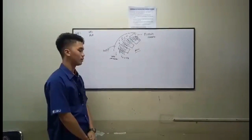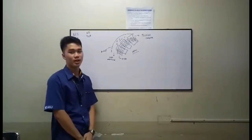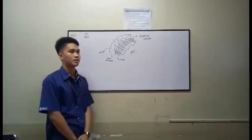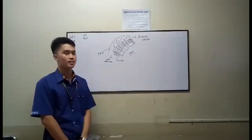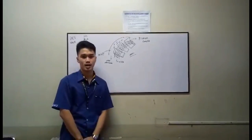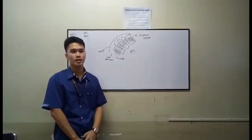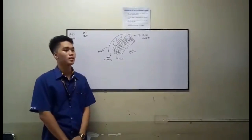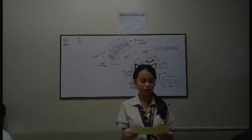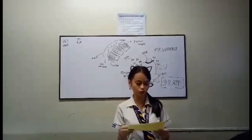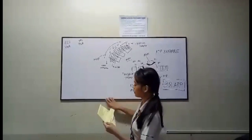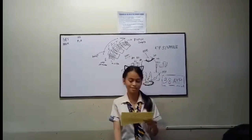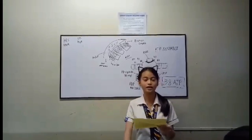This electric region will cause the hydrogen protons to attempt to get back to the matrix. However, since the inner membrane is not permeable to ions, hydrogen protons cannot easily pass back into the matrix. Because of this impermeability, the hydrogen protons will be directed toward ATP synthesis instead of freely re-entering the matrix.